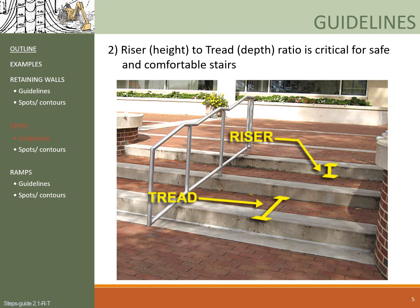Second, the riser to tread ratio is critical for safety and walking comfort. The riser is the height of the stairs — basically where you trip on. The higher the riser, the more effort to lift your foot; if it's too low, the stairs become a tripping hazard. The tread is the depth of the step where you step on. It needs to be deep enough to fit your entire foot, but as it gets larger you will need to make a bigger stride. So there needs to be a balance.